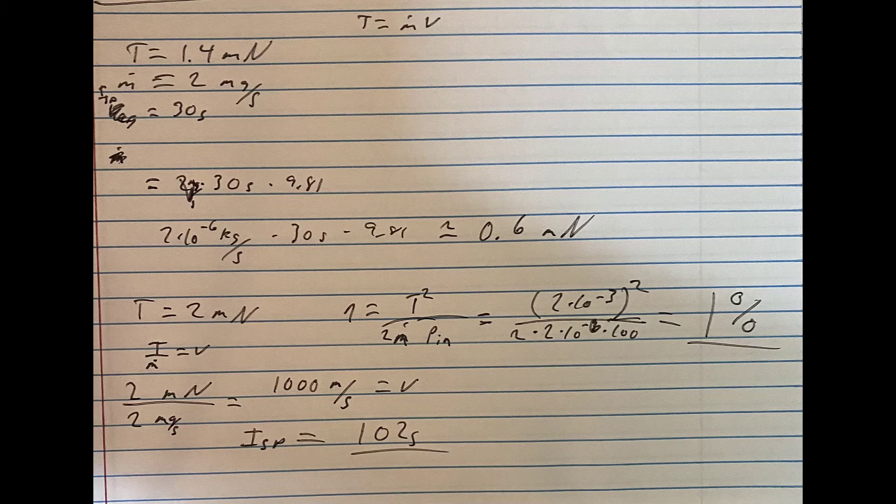Something to note, though, is that when we zeroed the thrust in, we actually zeroed it with 2 mg a second worth of xenon already running through it. So this thrust value wasn't calculating in the cold gas thrust we were getting from not turning on the thruster.